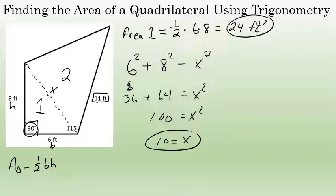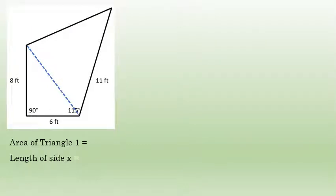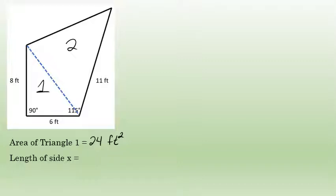Now I know that triangle 2 has one side that is 11 and another side that is 10. I'll use that information to find the area of triangle 2. I've already found that the area of triangle 1 is 24 square feet. The majority of the work in this problem will be involved with finding the area of triangle 2, and I now know two sides of that triangle.